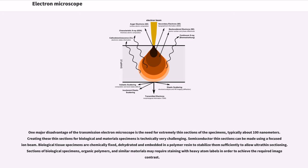Semiconductor thin sections can be made using a focused ion beam. Biological tissue specimens are chemically fixed, dehydrated and embedded in a polymer resin to stabilize them sufficiently to allow ultra-thin sectioning. Sections of biological specimens, organic polymers,